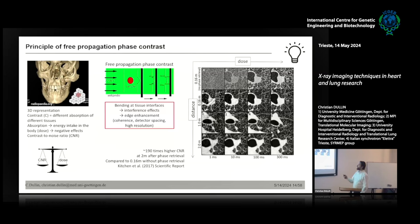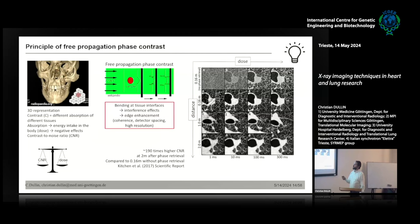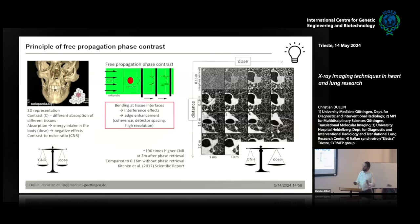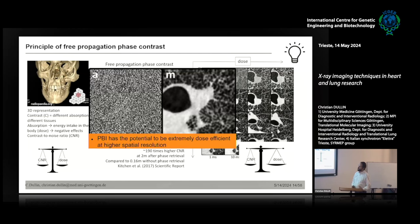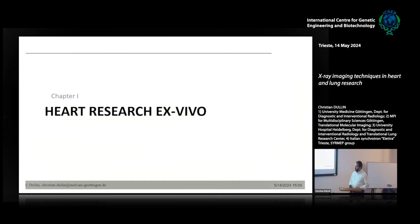This is a nice study from Marcus Kitchen in Australia using rabbit lung. If you don't use many x-rays you get a noisy image; if you use more and more x-rays you get a decent image, but that means a lot of dose for your subject. If you just move the detector away and do some post-processing, you get very nice images at the same dose level — with two meters of propagation distance. Comparing at the same x-ray dose: one without phase contrast, one with phase contrast. This already tells you why I'm interested in doing this in patients.